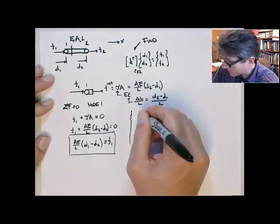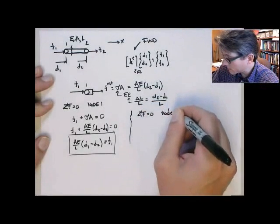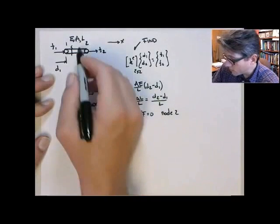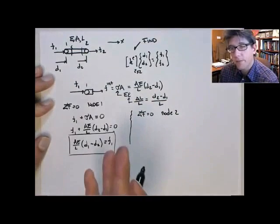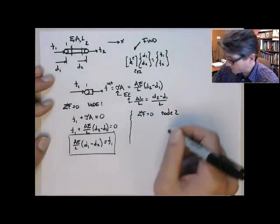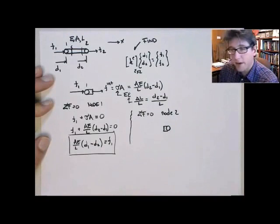I'm going to do sum of forces equals 0 for node 2. If we look at node 2, again, we're going to take a little cross-section. Now it'll be just to the left of node 2. This is what our free body diagram will look like.